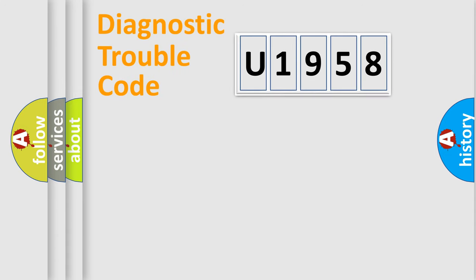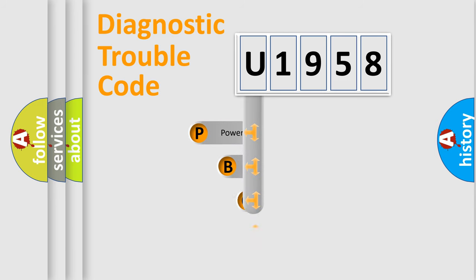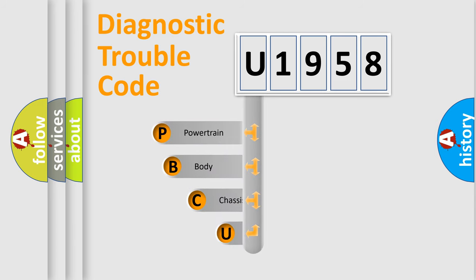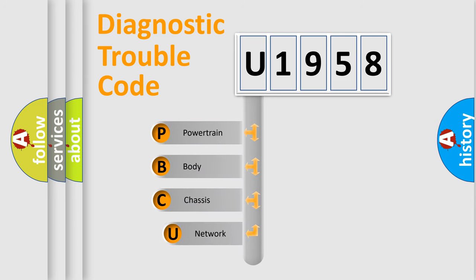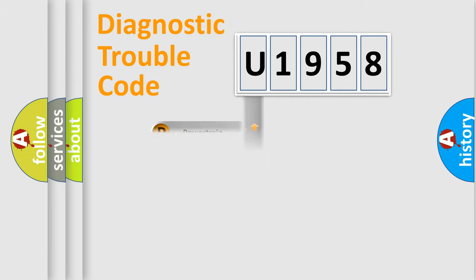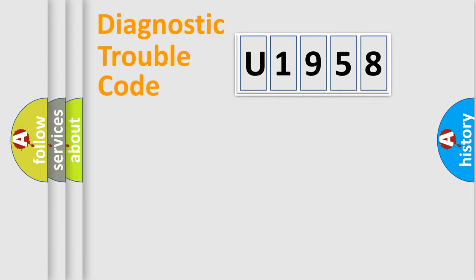First, let's look at the history of diagnostic fault code composition according to the OBD2 protocol, which is unified for all automakers since 2000. We divide the electric system of an automobile into four basic units: Powertrain, Body, Chassis, and Network.